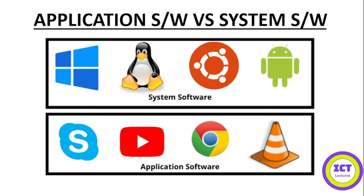All these are categories of softwares. In this particular tutorial we are going to dive deep into understanding the various features of system software and application software. We are also going to look at examples of these different types of softwares and their functions. If you are interested, kindly hang on till the end of this video so that you learn more about these two different types of softwares.